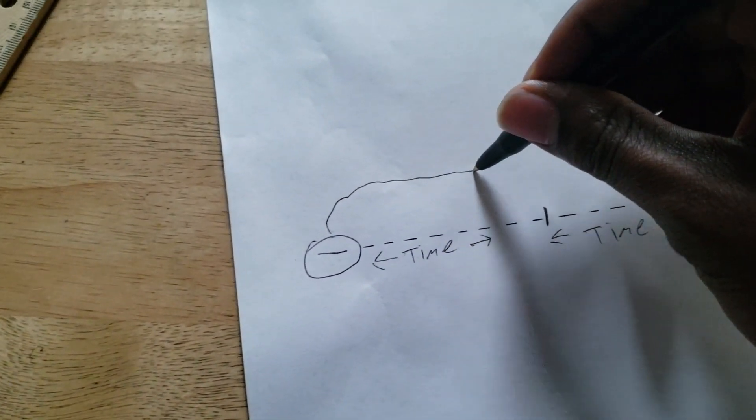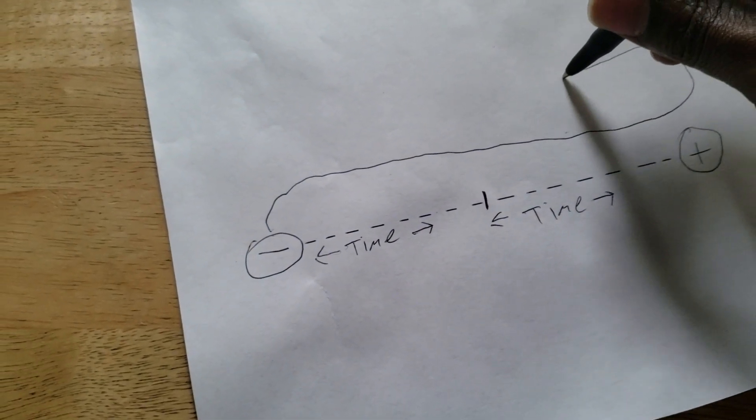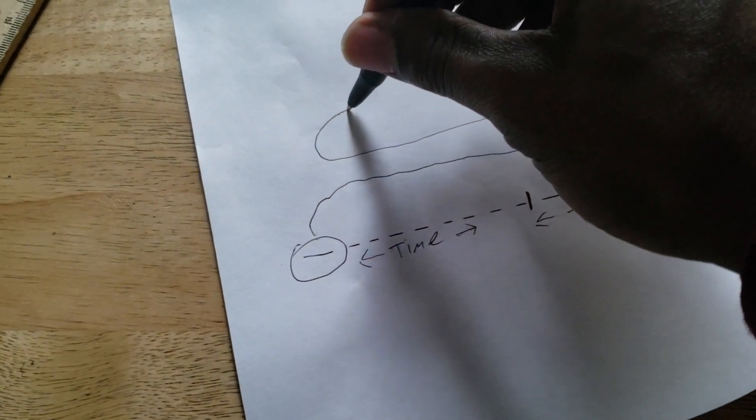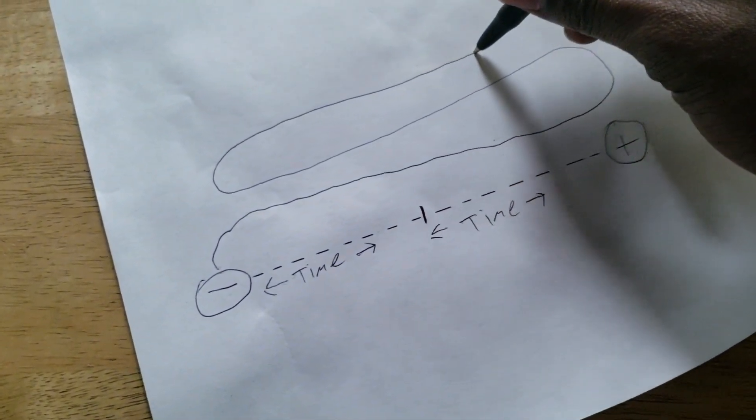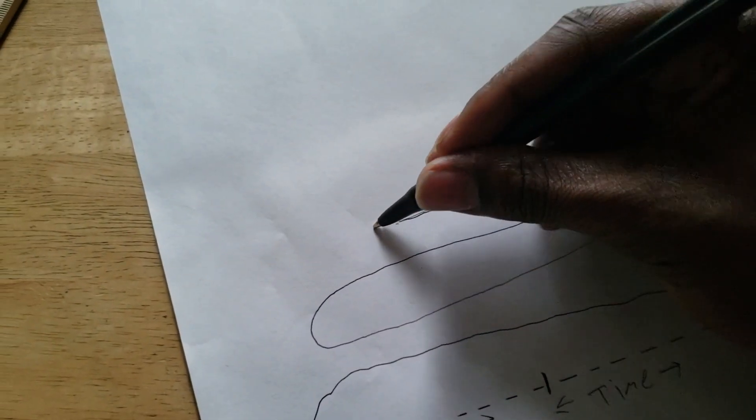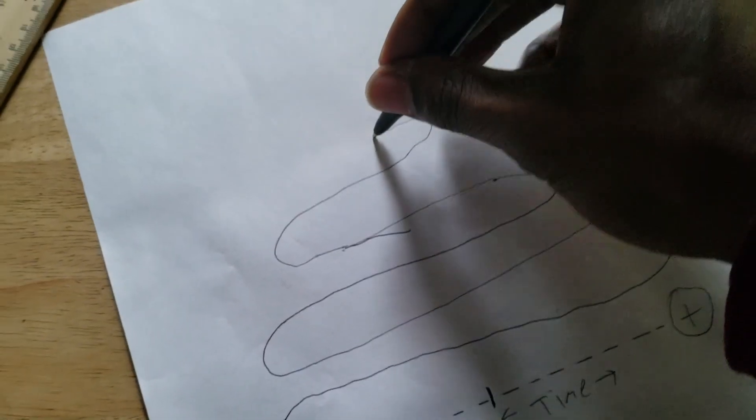This is what low vibrations look like—very slow and dense. But as you start to sharpen up and wise up, that time delay becomes shorter and shorter and shorter. You're sharpening up, you're wisening up. It becomes shorter and shorter and shorter.